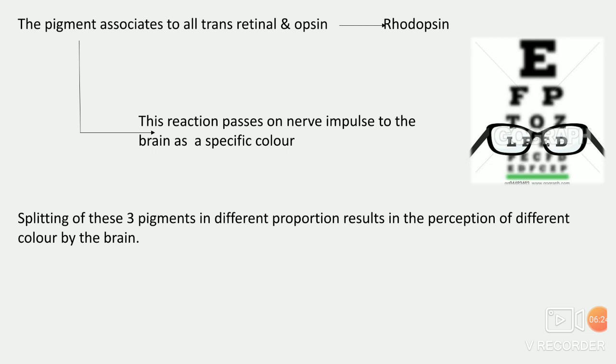The pigment associated with all-trans retinal opsin — that is rhodopsin — the reaction passes nerve impulses to the brain as a specific color. जब भी light strike होगी, bleaching होगा, depend करता है कि कौन सा color strike हो रहा है, और उसके हिसाब से nerve impulses through brain को pass होगा जो हमें specific color बताएगा. Splitting of these three pigments — red, blue, and green — in three different proportions gives a result that is the perception of different colors by the brain.